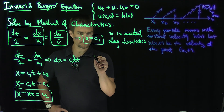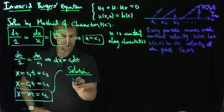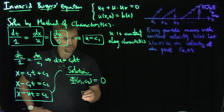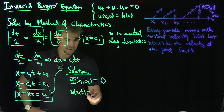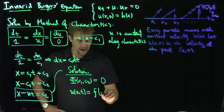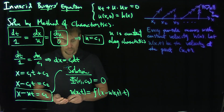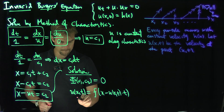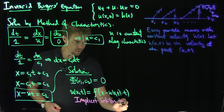So our solution to Burgers' equation is phi(c1, c2) equals 0. Solving for c1, this gives u(x,t) equals f(x minus u(x,t)·t), where f is some arbitrary function. So this is an implicit solution to Burgers' equation.